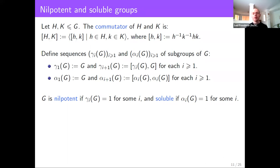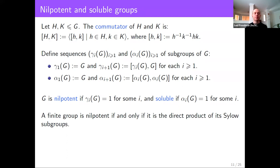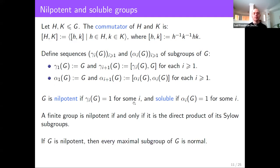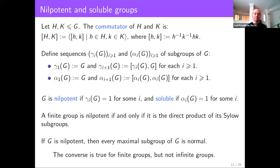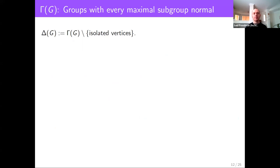An important equivalent definition: a finite group is nilpotent if and only if it is the direct product of its Sylow subgroups. Also, if any group is nilpotent, every maximal subgroup of that group is normal; for finite groups the converse also holds. However, there are infinite non-nilpotent groups that still have every maximal subgroup normal. I'll now look at the case where G is a group with every maximal subgroup normal — this includes all nilpotent groups and some additional infinite groups. For convenience, define δ(G) to be the graph obtained from γ(G) by deleting all isolated vertices.